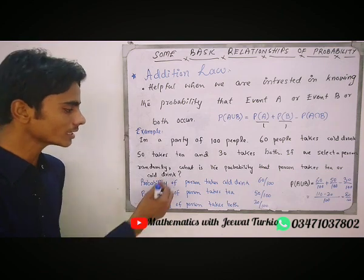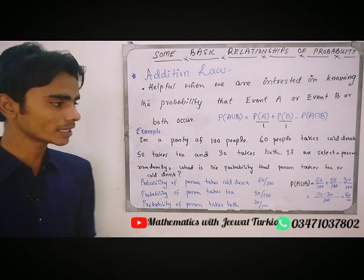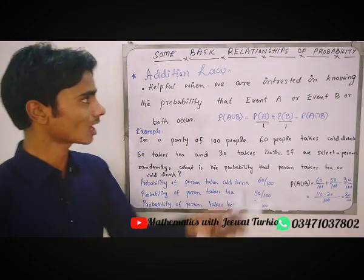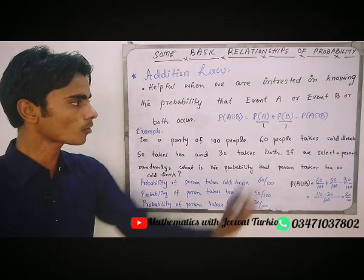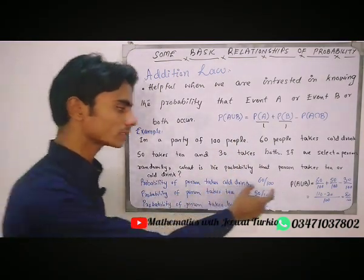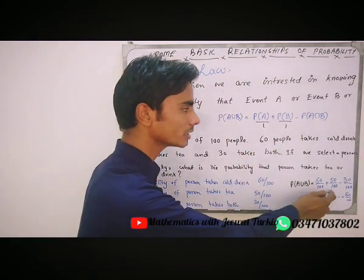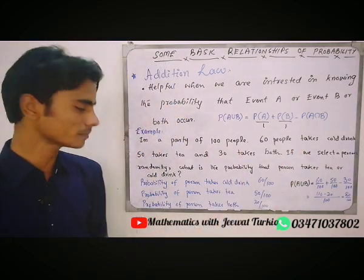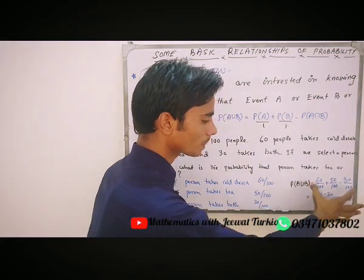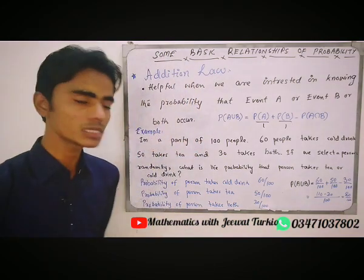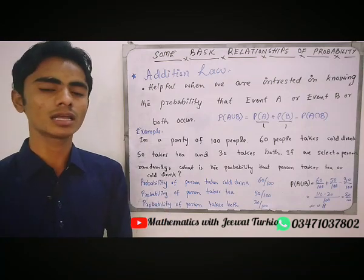So what is the probability that a person texts T or cold ring or both? We use the addition law: probability of A union B equals probability of A plus probability of B minus probability of A intersection B. That is 60 by 100 plus 50 by 100 minus 30 by 100, which equals 80 by 100. So the probability is 0.8. This is the addition law and its application.